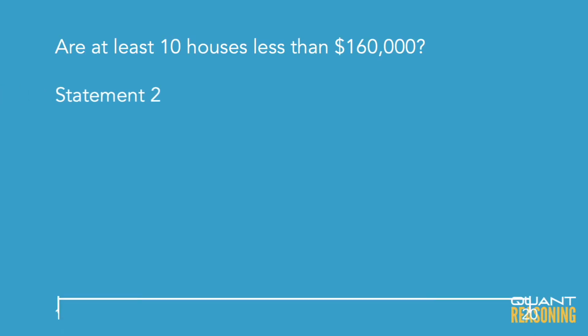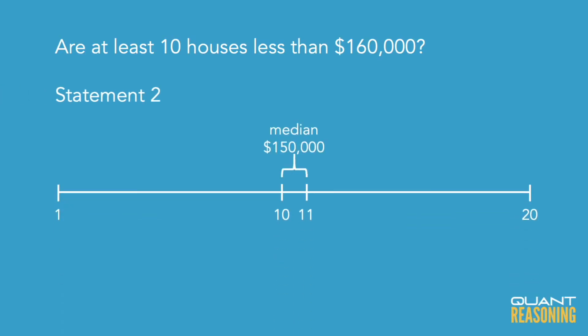So we can go ahead and eliminate A and D, and look at statement two. Statement two is talking about the median of the 20 numbers. When we arrange them in ascending order, we look at the average of the middle two — the 10th and the 11th numbers — because 20 is an even number, so there's no single middle number. The average of the 10th and 11th numbers would be the median.